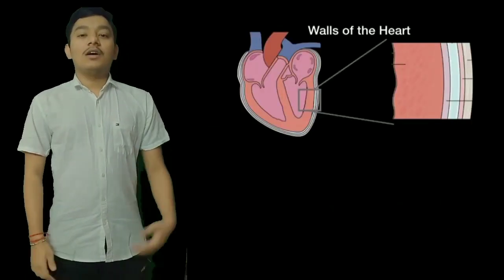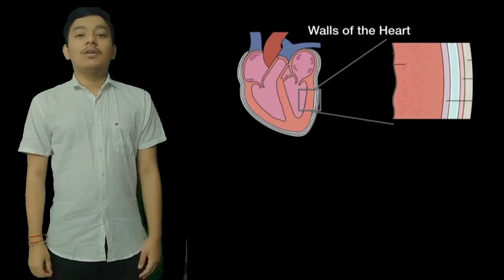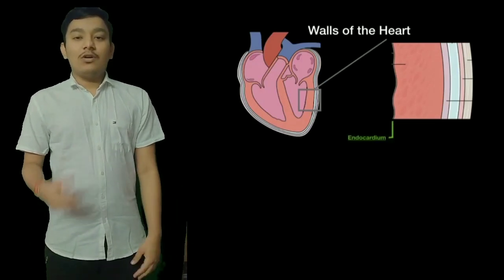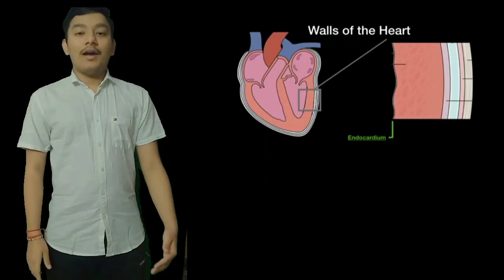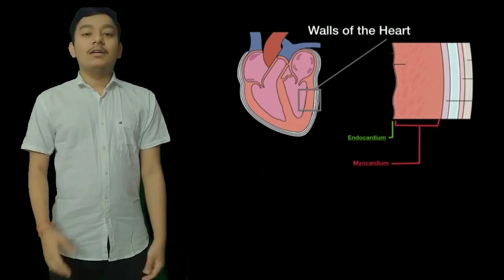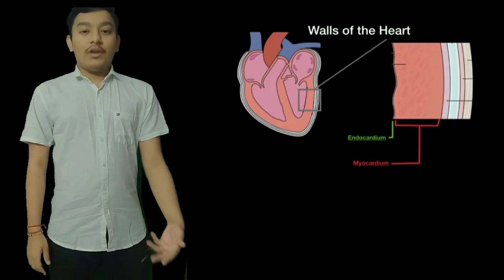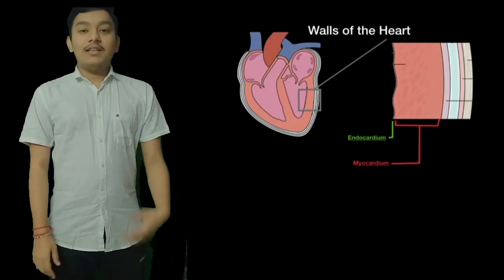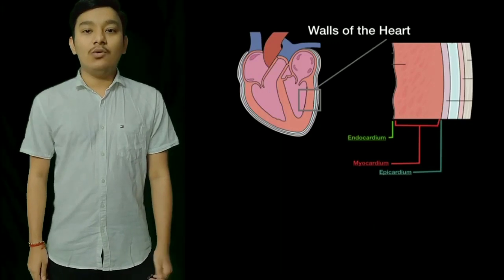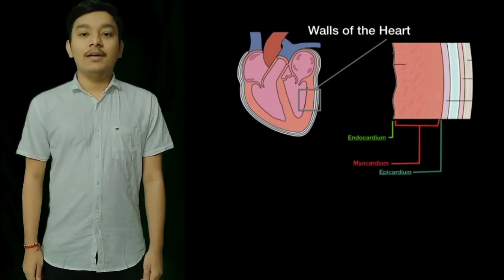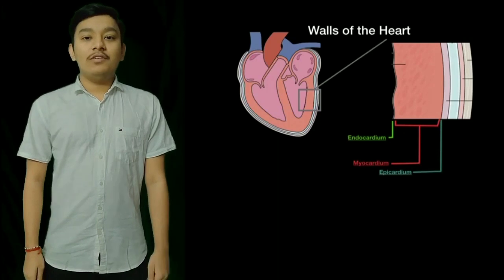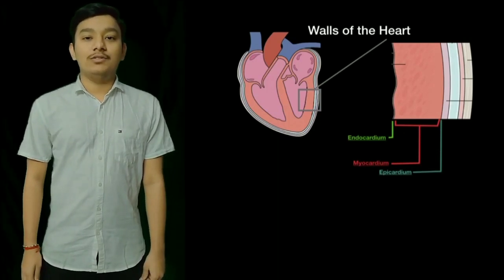The heart walls consist of three layers of tissue. The first is the myocardium, which is the muscular tissue of the heart. The next is the endocardium, which lines the inside of the heart and protects the walls and chambers. The pericardium is a thin protective coating surrounding the other parts, and the epicardium is the protective layer consisting mostly of connective tissue.